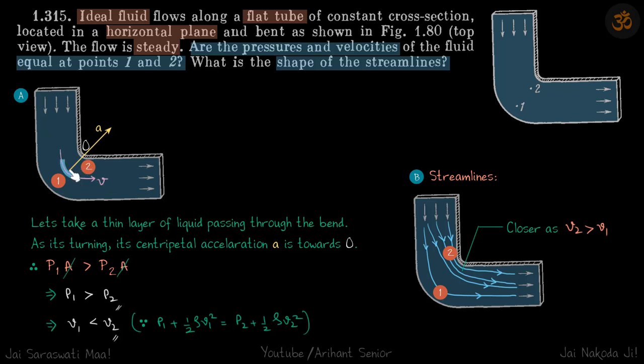We can say this layer of liquid has a centripetal acceleration towards O. Hence, p1 has to be greater than p2, because the only force on this layer of liquid in this direction is because of pressure.